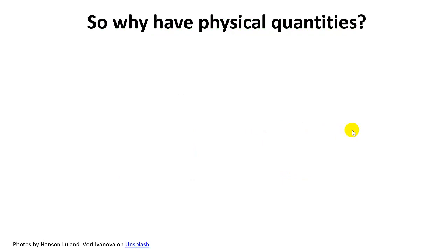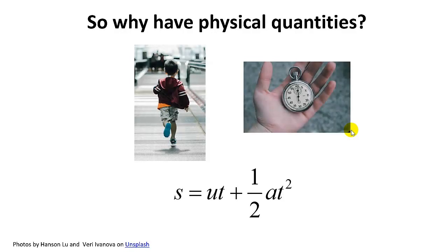Why do we introduce physical quantities in physics? Because physics is an experimental science. When we quantify our observations, we can formulate laws and equations that allow us to make predictions of future phenomena.